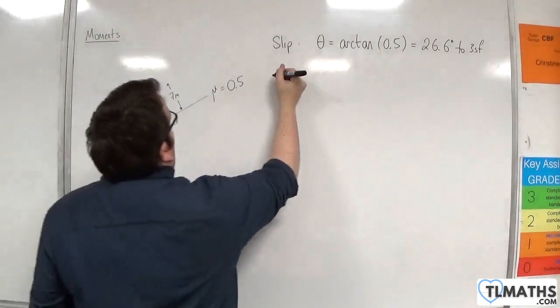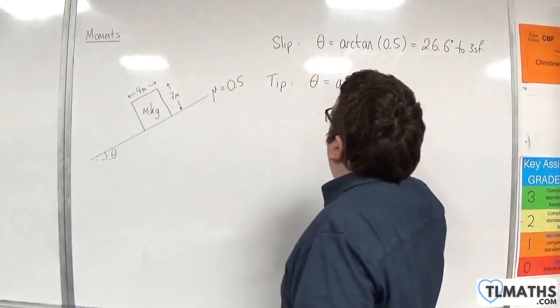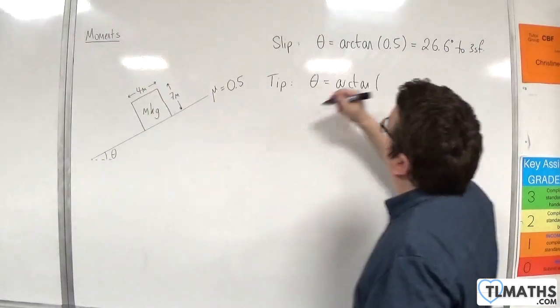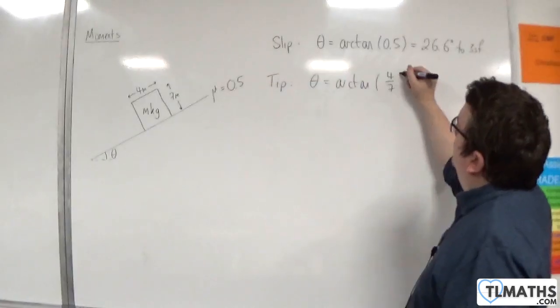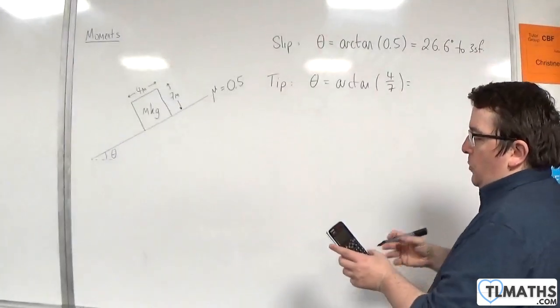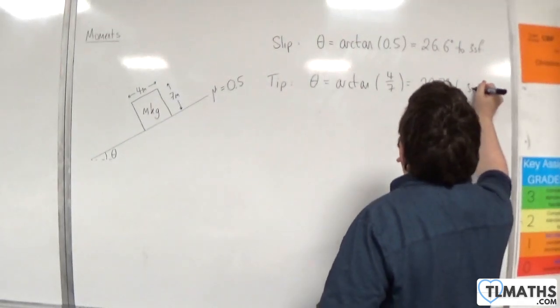Now we can work out the angle at which it will tip. That is going to be the arctan of 4 over 7. So arctan of 4 over 7 is 29.7 degrees to 3 significant figures.